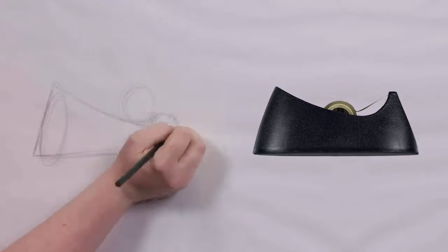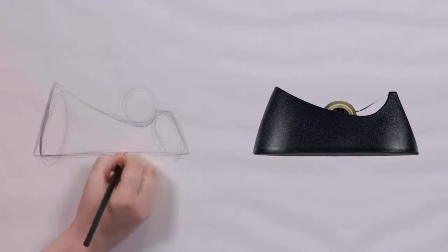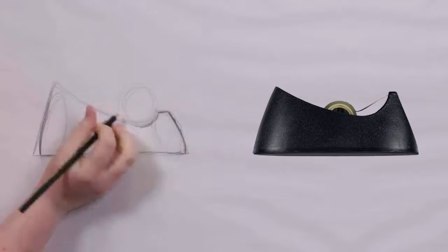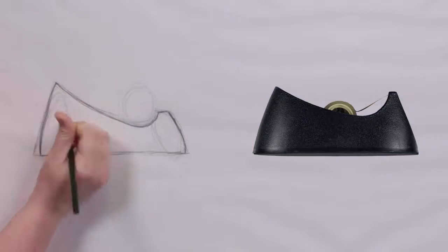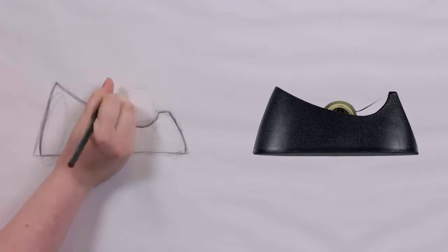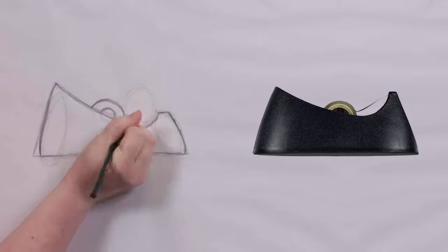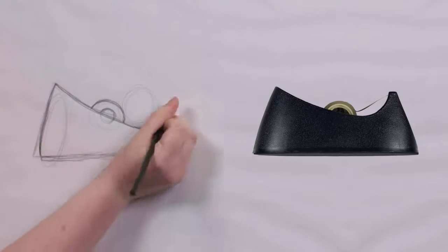Note how the complex curve of the top of the dispenser can be broken down into two angled lines and part of a circle. You can start detailing the sketch by adding in rounded corners and smaller details where appropriate.